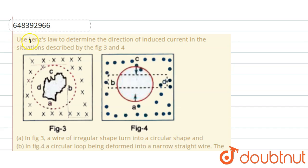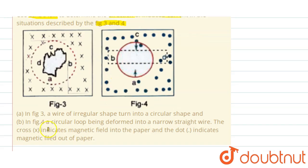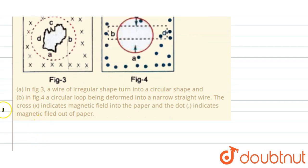Hello friends, the question is: using Lenz's law, determine the direction of induced current in the situation described by figure 3 and figure 4. In figure 3, a wire of irregular shape turns into a circular shape. In figure 4, the loop is being deformed into a narrow straight wire. The cross X indicates the magnetic field is into the paper, and the dot indicates the magnetic field is out of the paper.